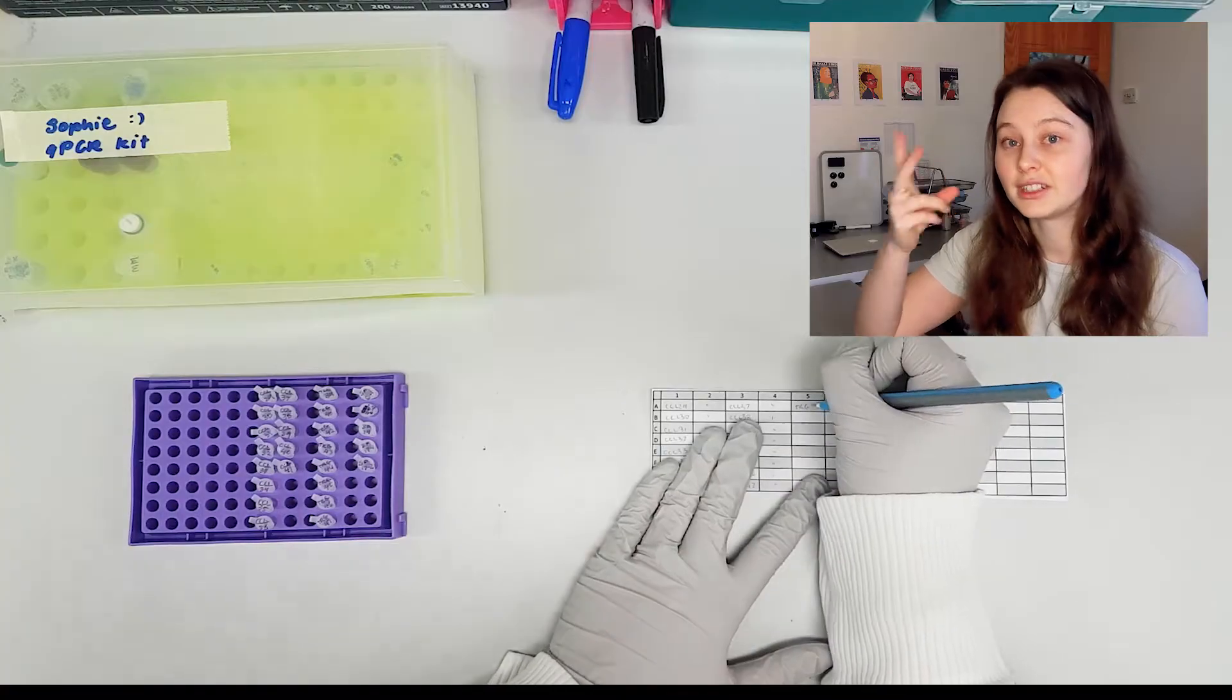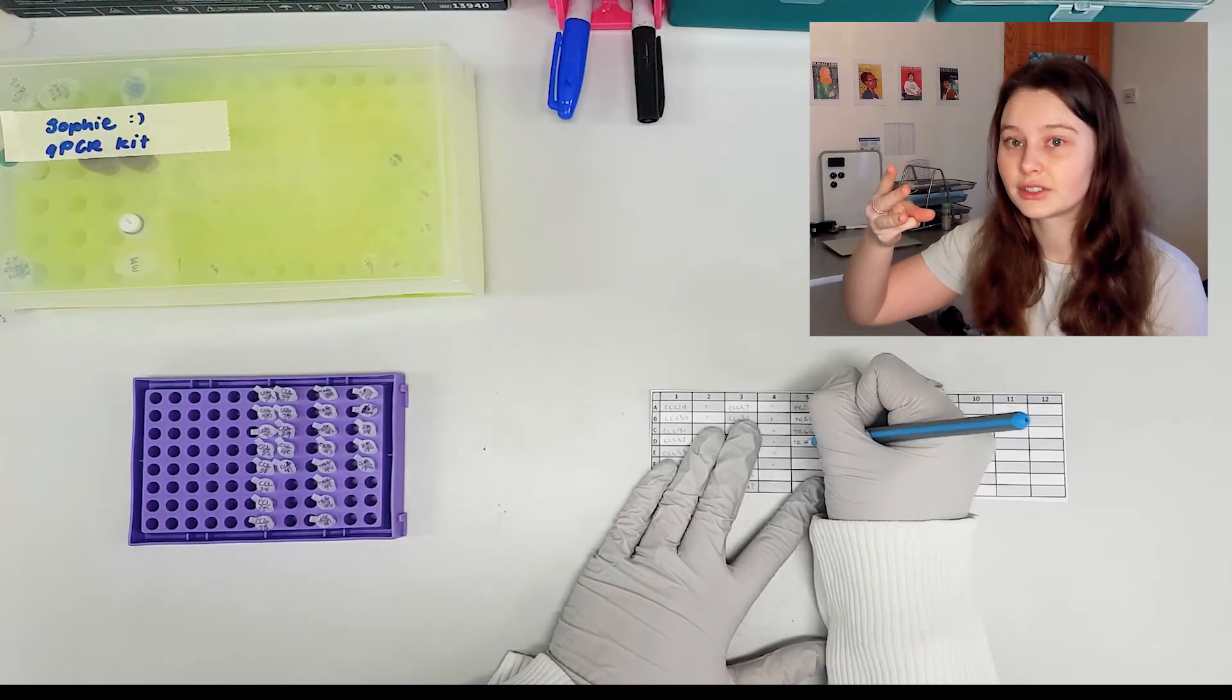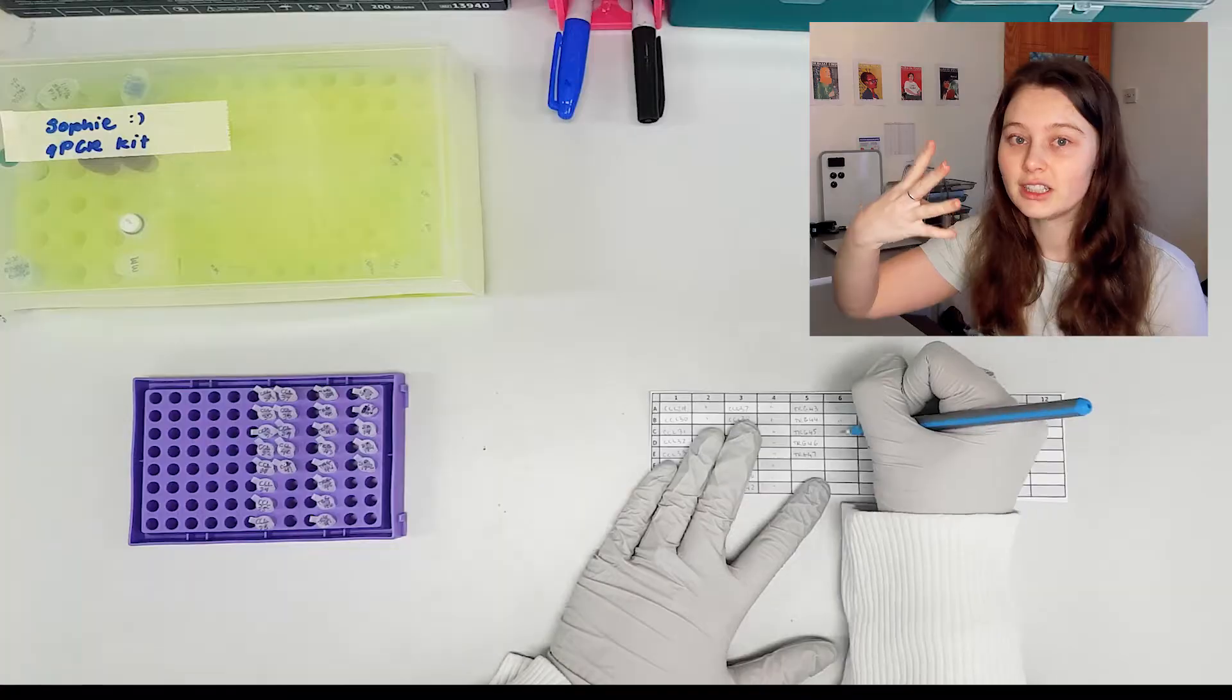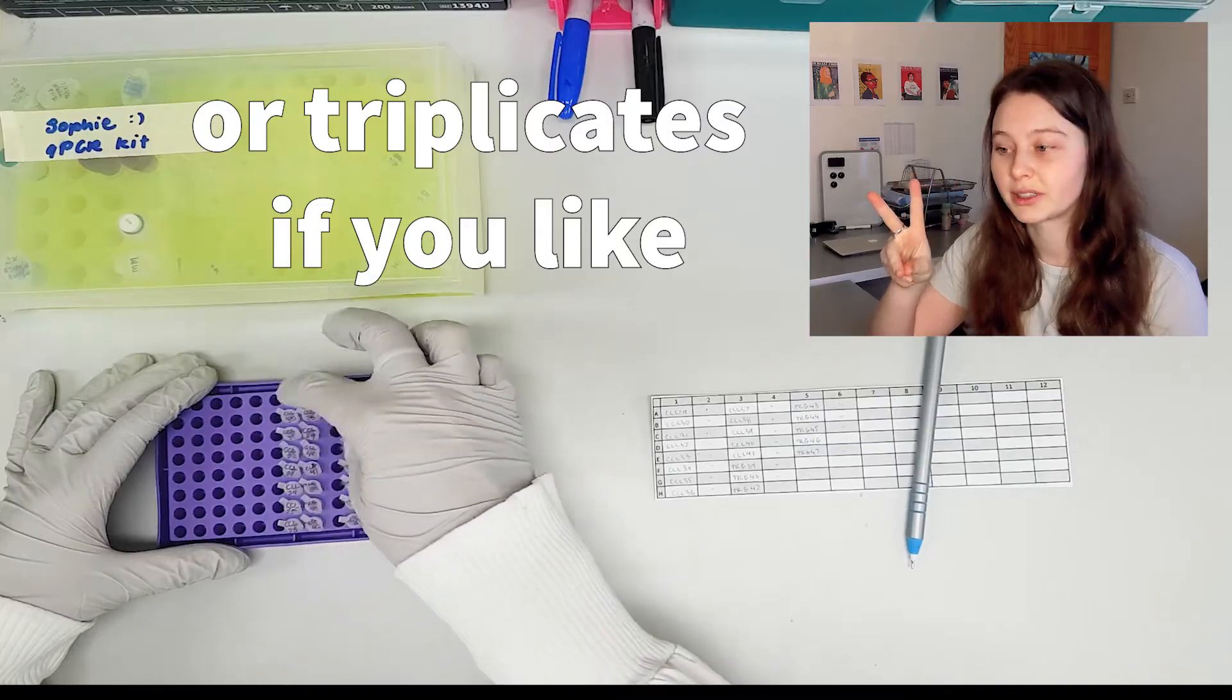the second thing is your negative template control, third thing is your positive controls, and then fourthly you need to double all of that because you're going to do technical duplicates.